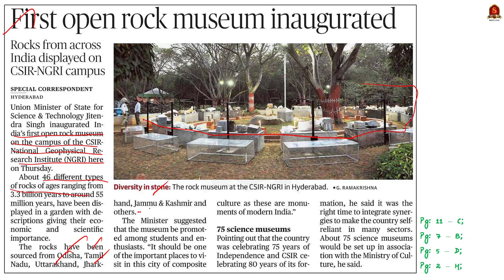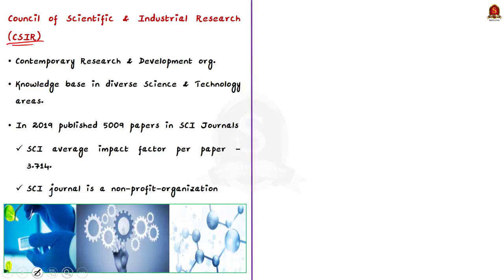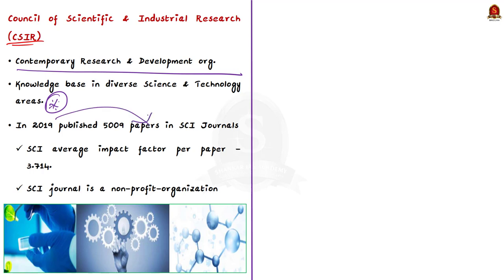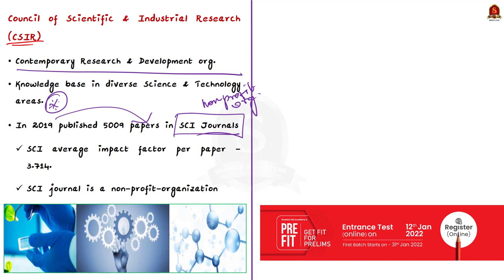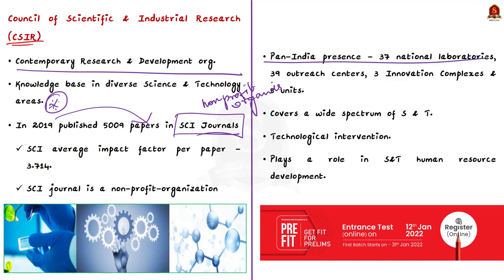CSIR — the Council of Scientific and Industrial Research — is a contemporary R&D organization known for its knowledge base in diverse science and technology areas. In 2019, CSIR published 5,009 papers in SCI journals with an average impact factor of 3.714. It has a pan-India presence with a dynamic network of 37 national laboratories, 39 outreach centers, 3 innovation complexes, and 5 units.